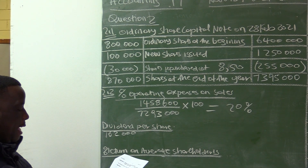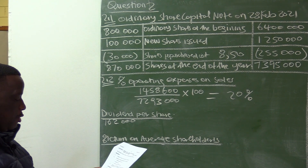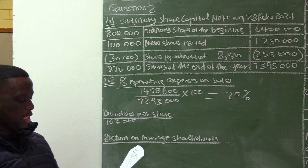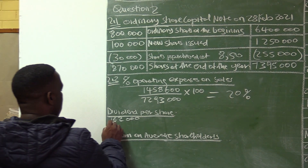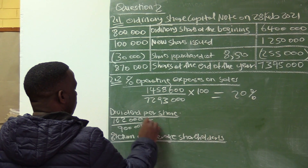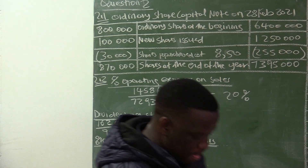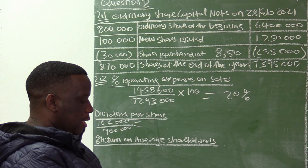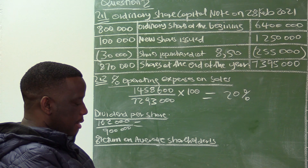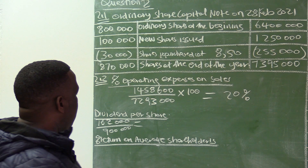Another change was on the 1st of January, which is after the interim dividend. So the interim dividend was paid on the 30th of September, which tells us the total number of shares at that time was 900,000. The interim dividend per share is $162,000 divided by 900,000, which is 18 cents.